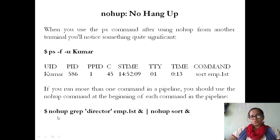For example: 'nohup grep [args] | nohup sort [args] &'. Remember to terminate the combined command with an ampersand. This is how you use multiple commands in a single pipeline with nohup.